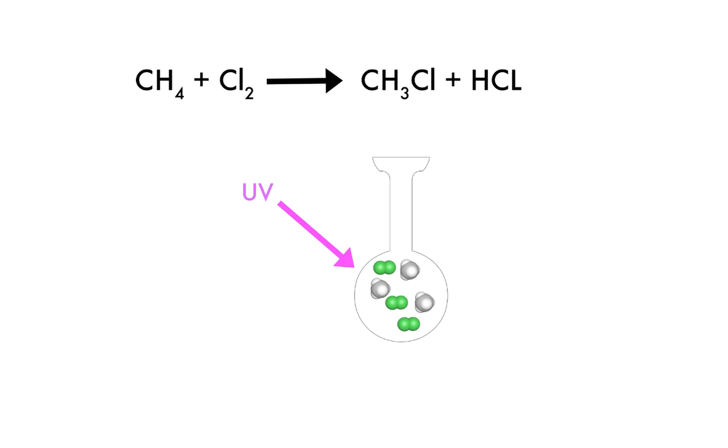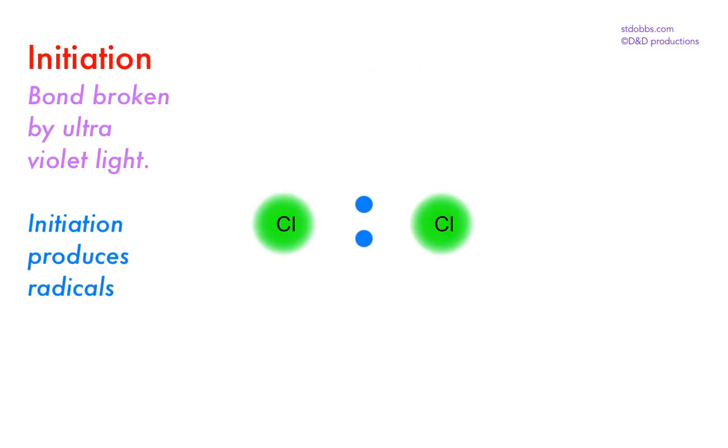This is initiated by a bond being split equally, so that both resulting species has an unpaired electron. They are called radicals. The ultraviolet light has enough energy to break the chlorine-chlorine bond, movement of each single electron is denoted by a half curly arrow, and two chlorine radicals are formed. This is the initiation reaction.